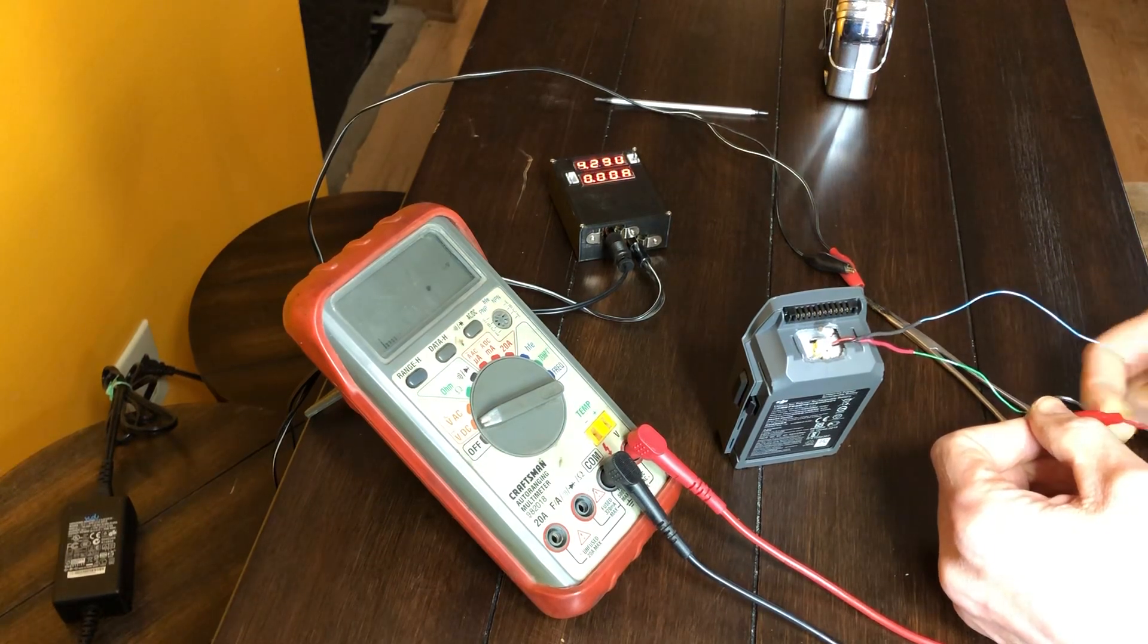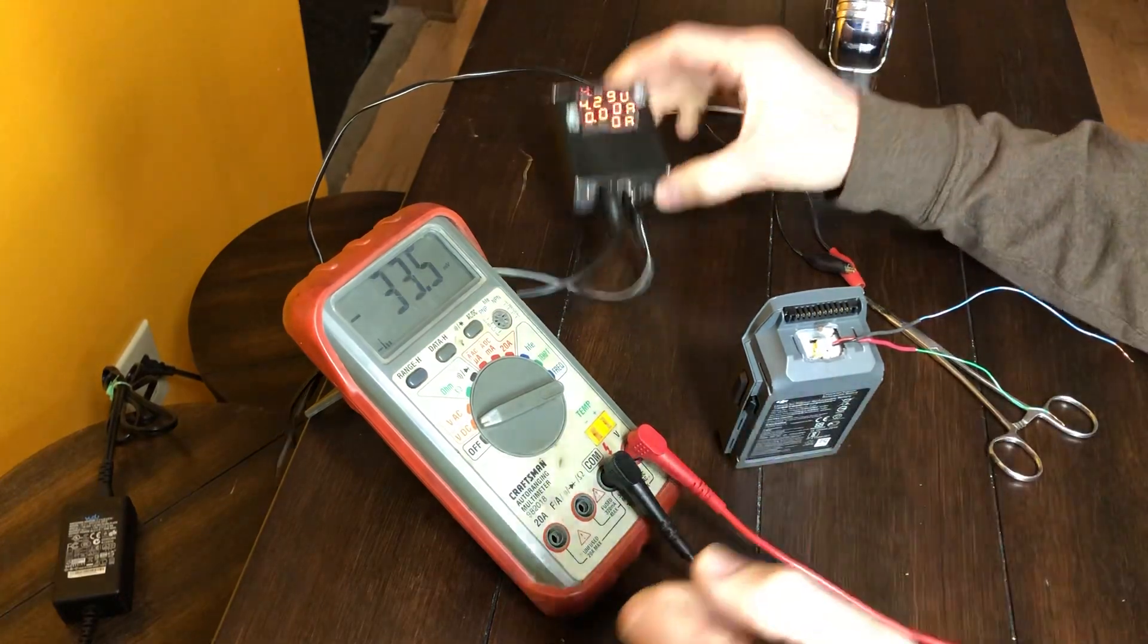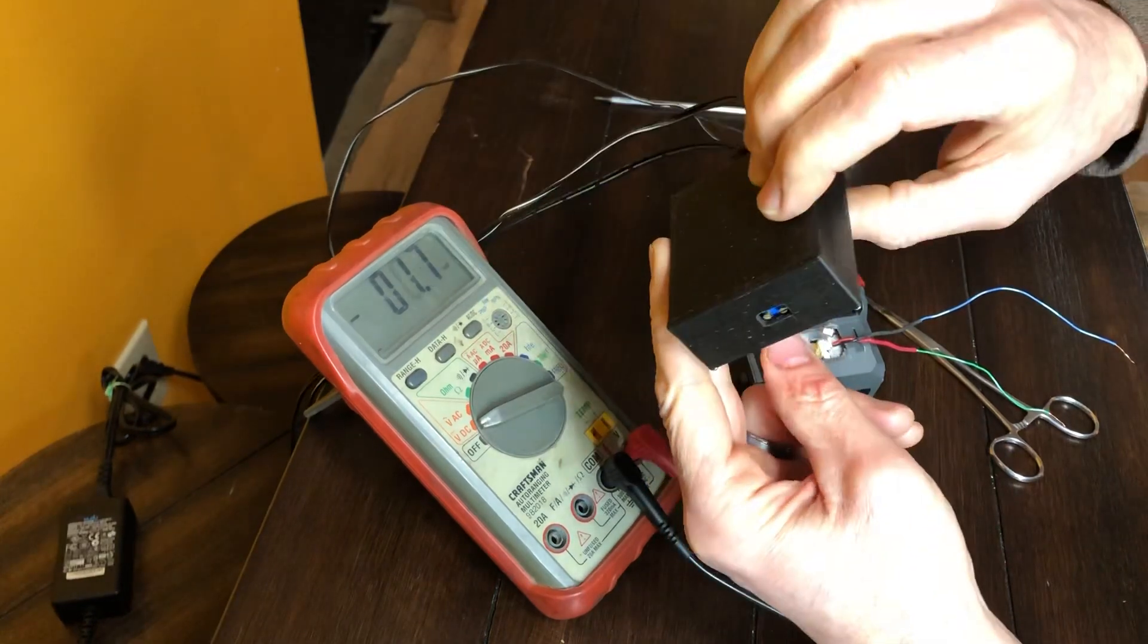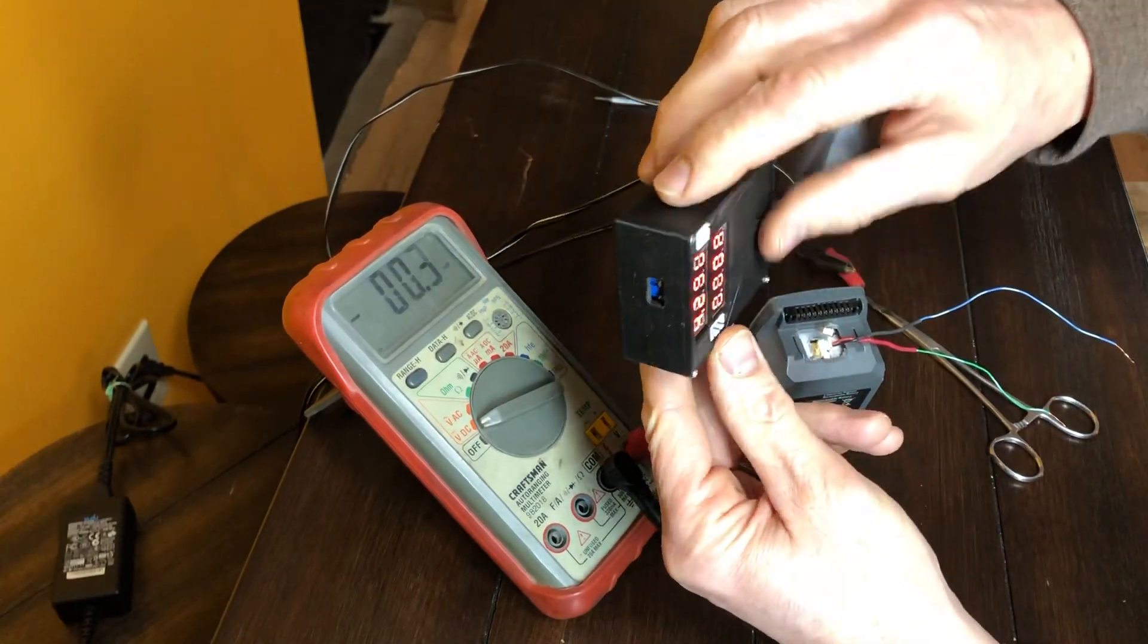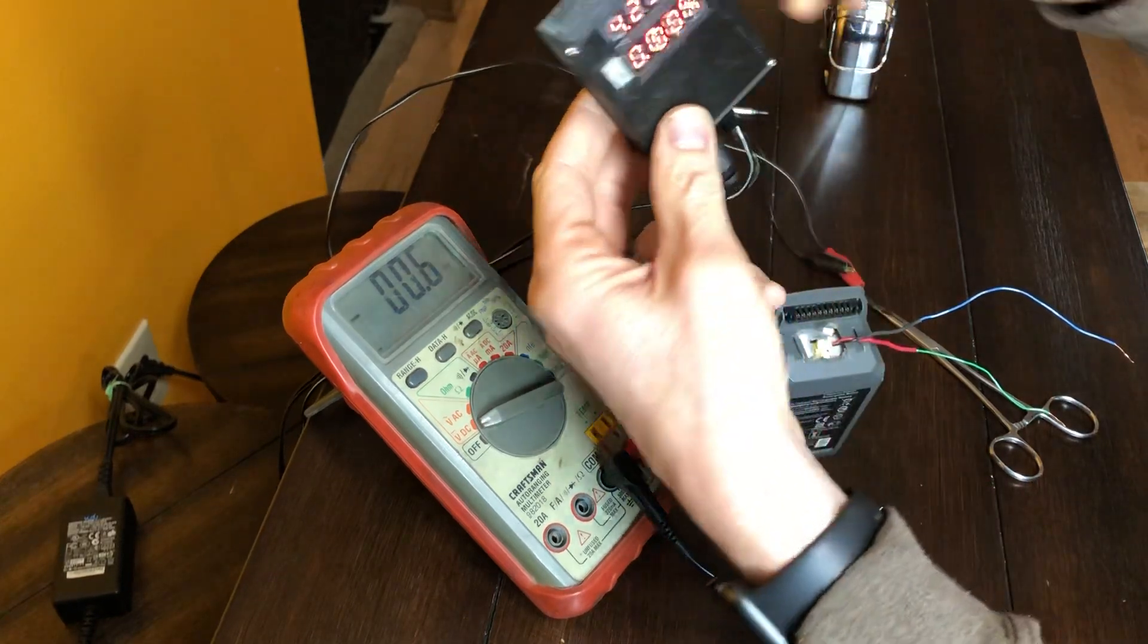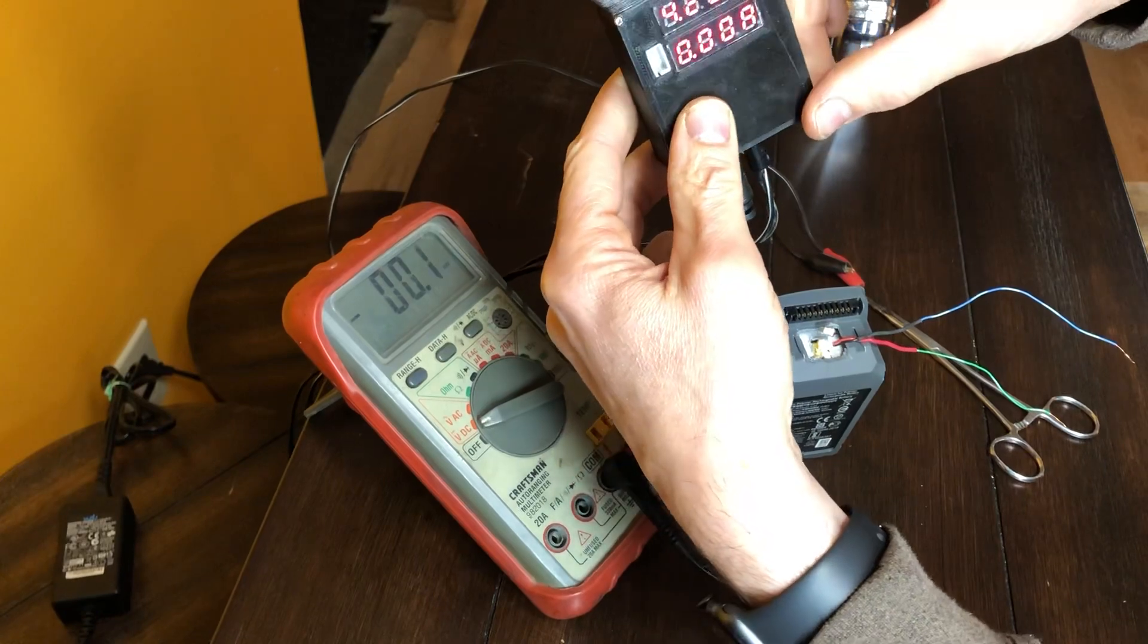Don't go by a lithium battery charger - just get you a constant current board. You can get these. I built a little 3D printed box, but inside here is just a buck boost board, constant current. Got it set for 2 amps. I set it to 4.29.